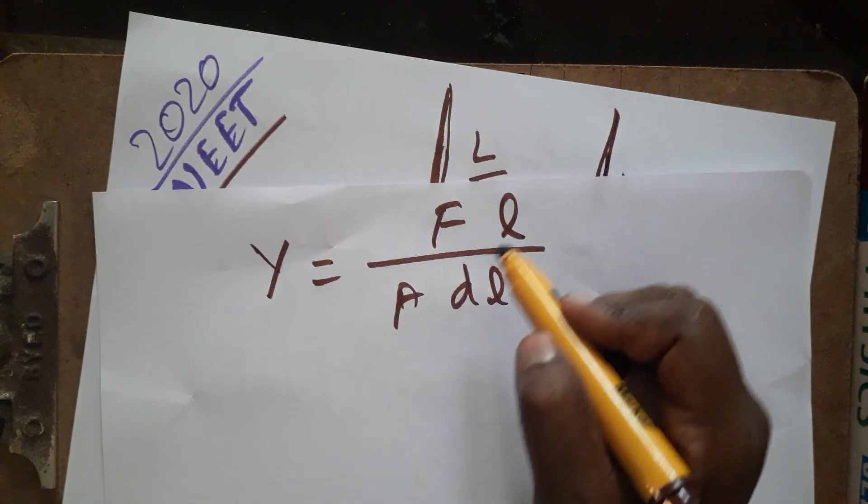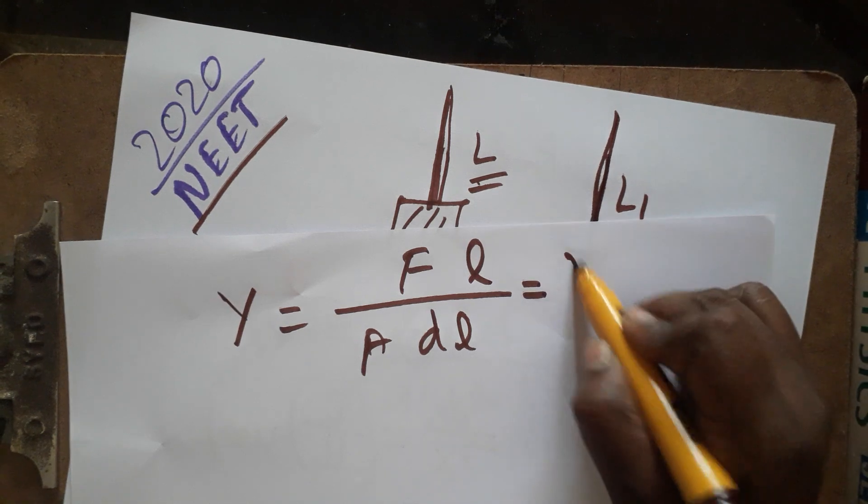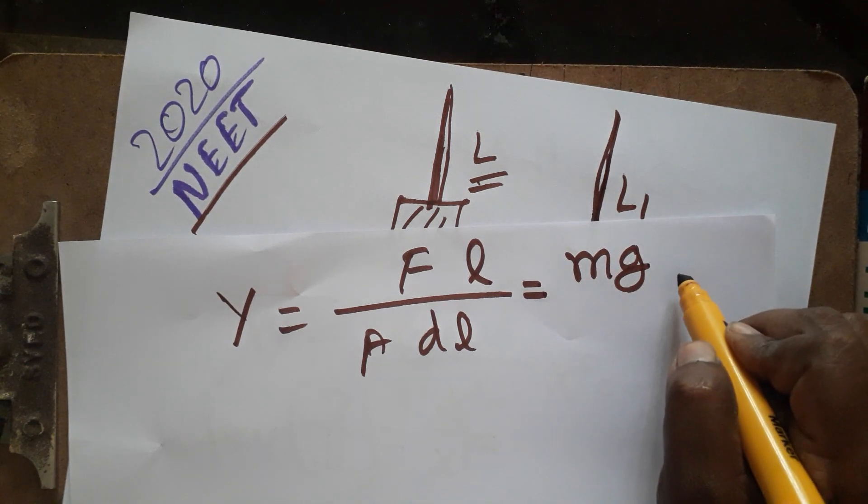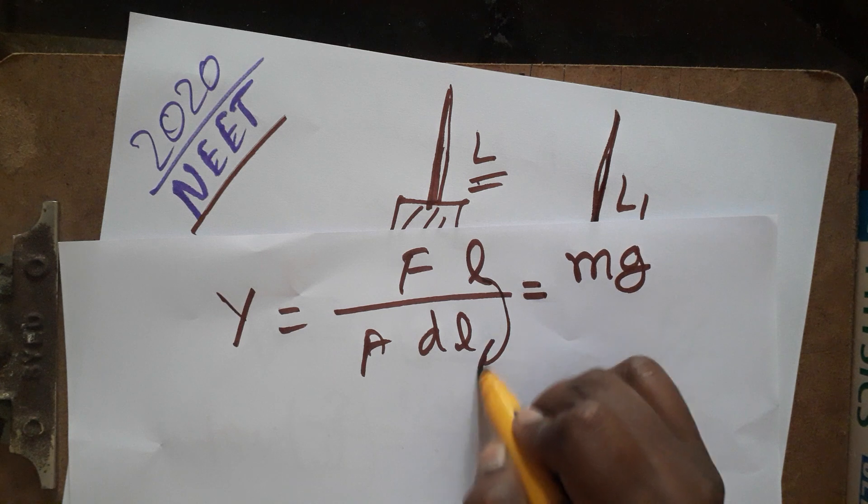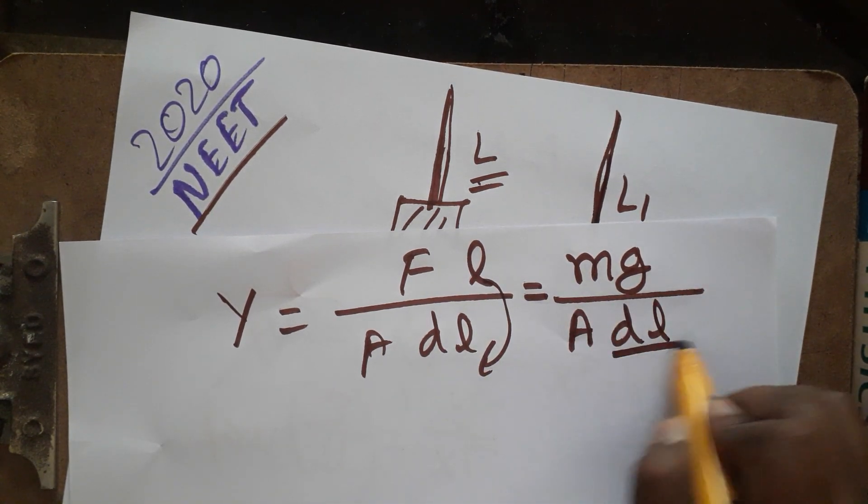Force is the load weight. Force is equal to mass times gravity. And this L is taken in the denominator: A times dL by L.